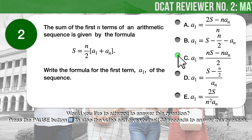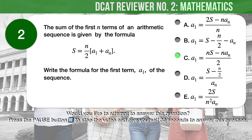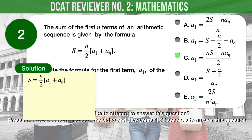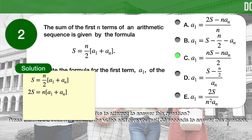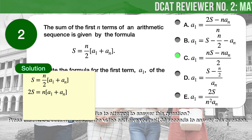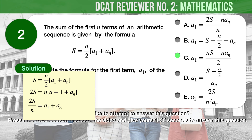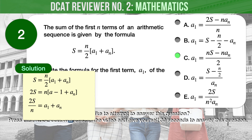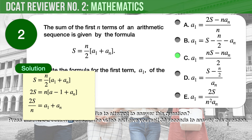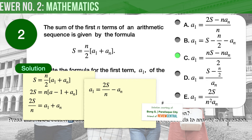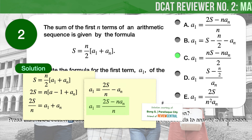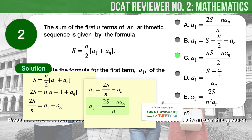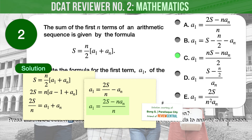The correct answer is A: A1 equals the quantity 2S minus n times An, all over n. From the given arithmetic sequence formula, let's solve for A1. First, multiply both sides of the equation by 2. We get 2S equals n times the quantity A1 plus An. Next, divide both sides by n. The equation is now 2S over n equals A1 plus An. Expressing the equation in terms of A1: A1 equals 2S over n minus An. Therefore, our formula for the first term A1 is A1 equals the quantity 2S minus n times An, all over n.